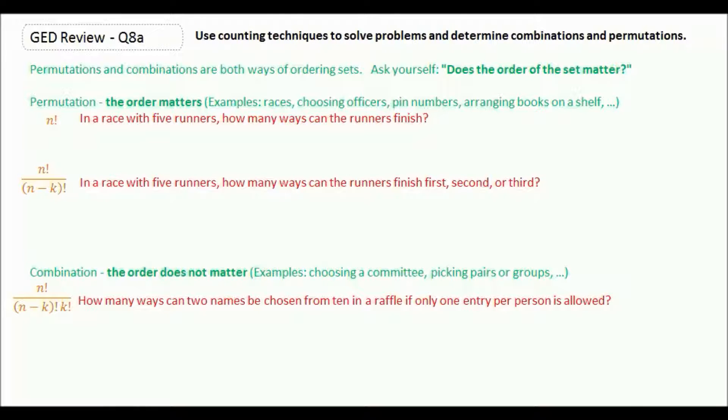For permutation, the order matters. Some examples are races finishing first, second, and third; choosing officers such as a president, vice president, secretary, and treasurer; trying to calculate pin numbers; and arranging books on a shelf.